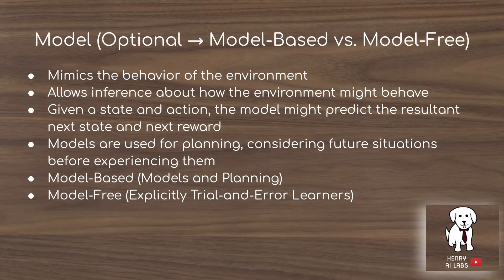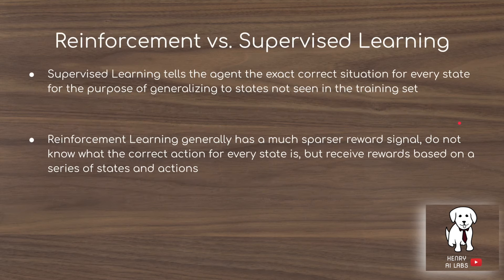The model mimics the behavior of the environment and allows you to do inference about how the environment might behave. With a model-based reinforcement learning system, you can do a lot of planning and consider future situations before you actually experience them, whereas model-free agents are explicitly trial-and-error learners where all learning comes from experience. Generally, in supervised learning we have the exact correct action for every state for the purpose of generalizing to unseen states, but in reinforcement learning we have a much sparser reward signal and receive rewards based on a series of states and actions — this series of decision-making is what generally differentiates reinforcement and supervised learning.